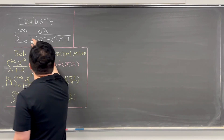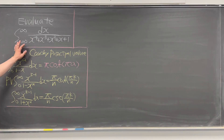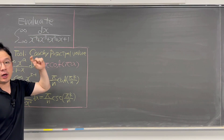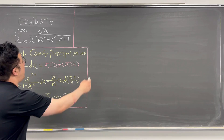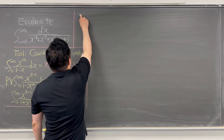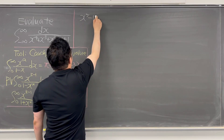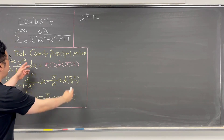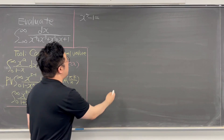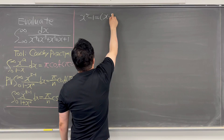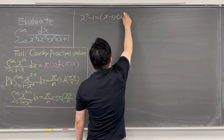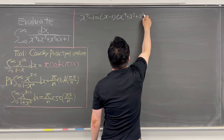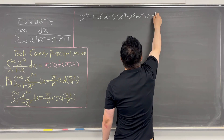Okay, so first of all, let's focus on the denominator: x to the power of 4 plus x cubed plus x squared plus x plus 1. We can notice that x to the power of 5 minus 1, if you factor that out, gives us x minus 1 times x to the power of 4 plus x cubed plus x squared plus x plus 1.